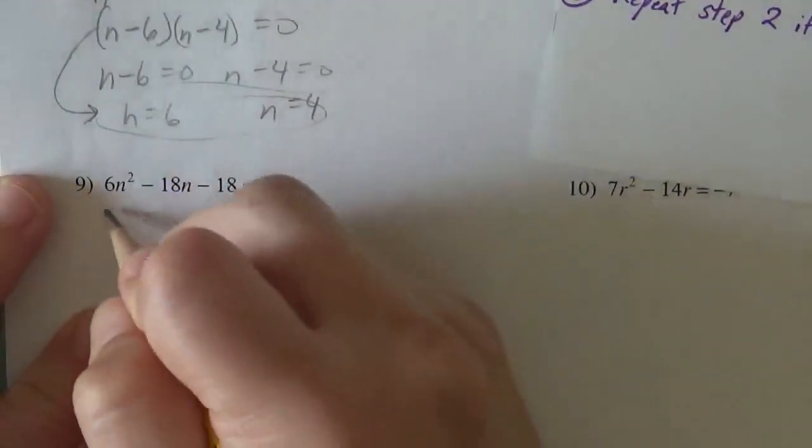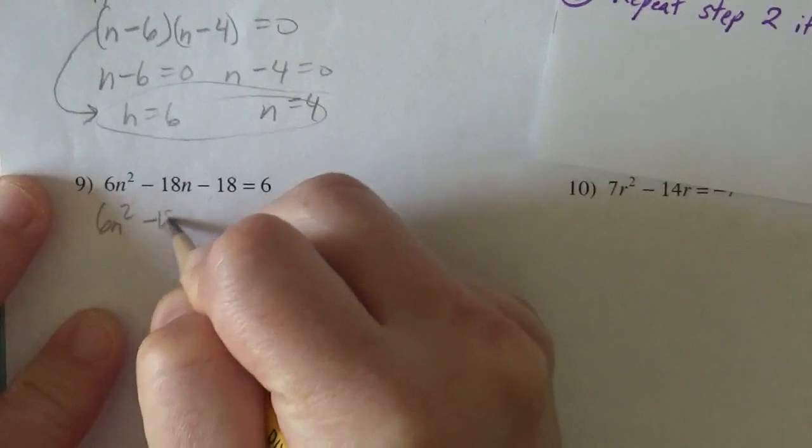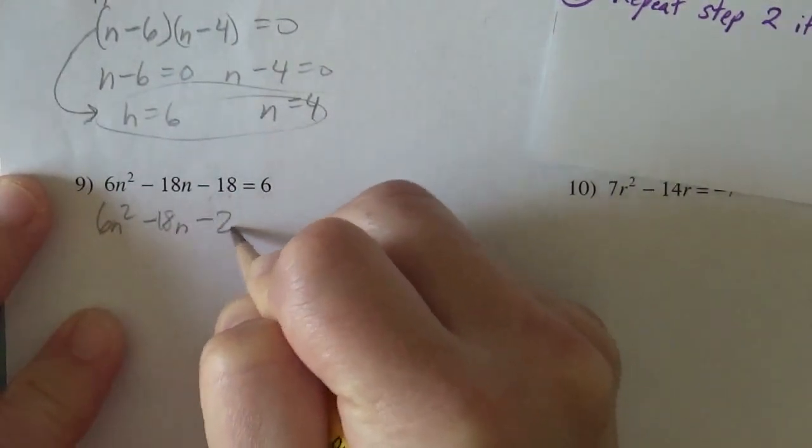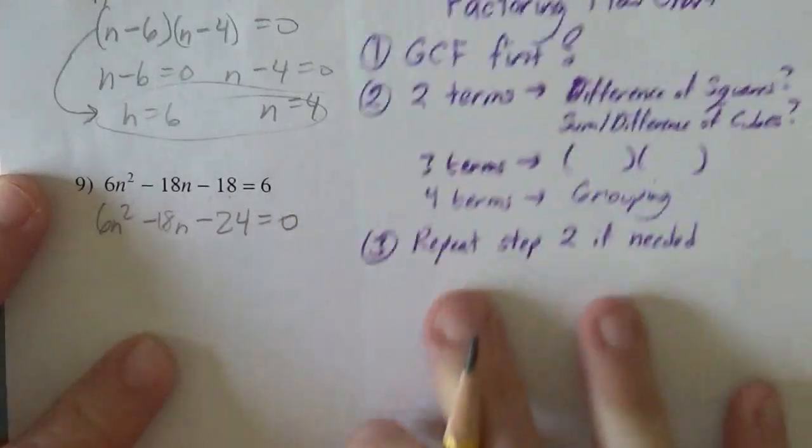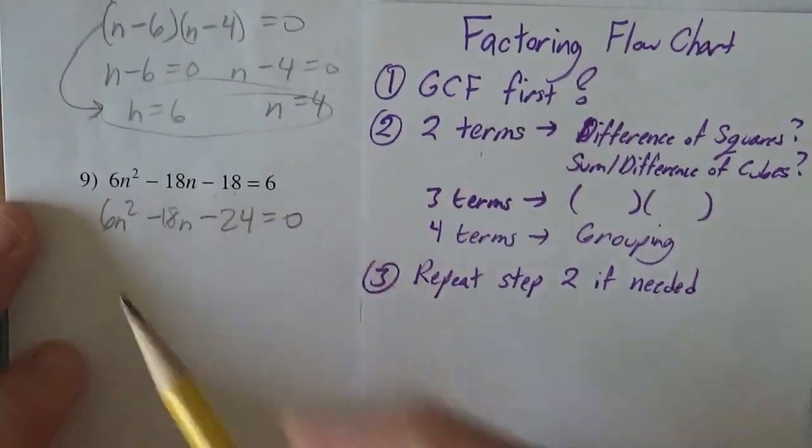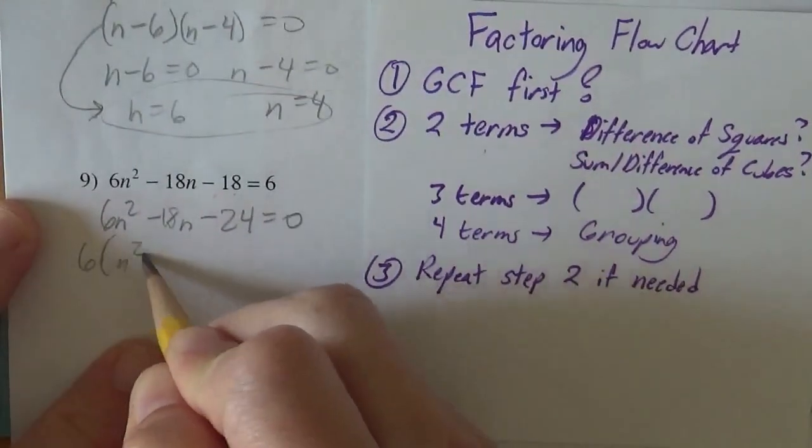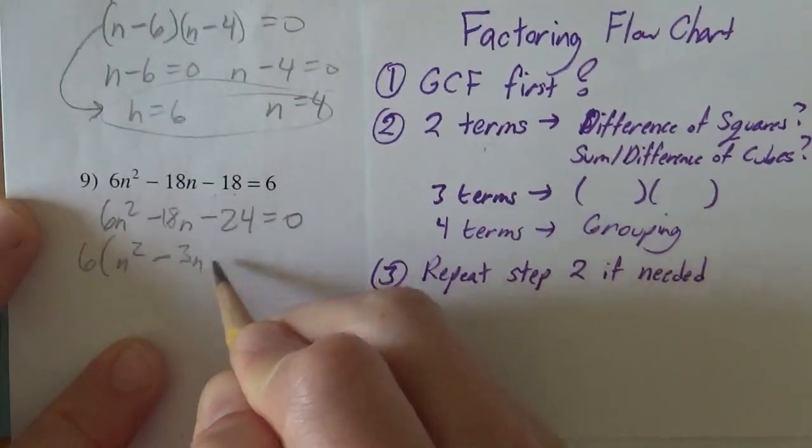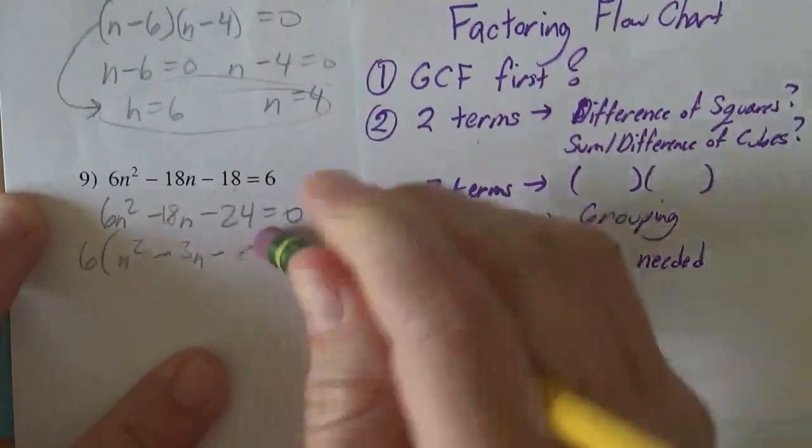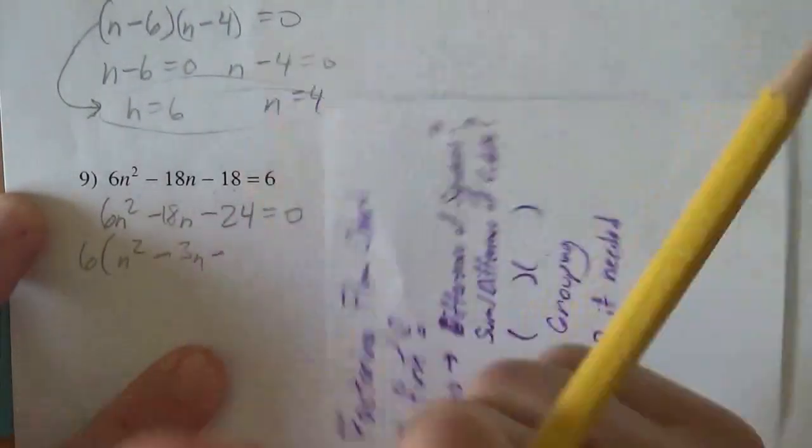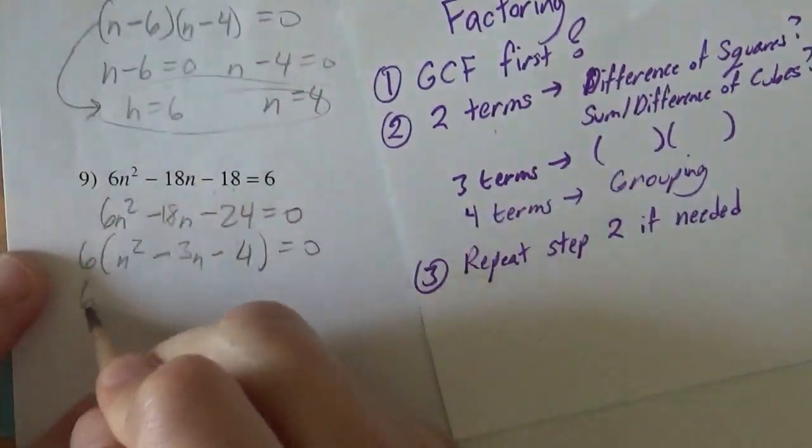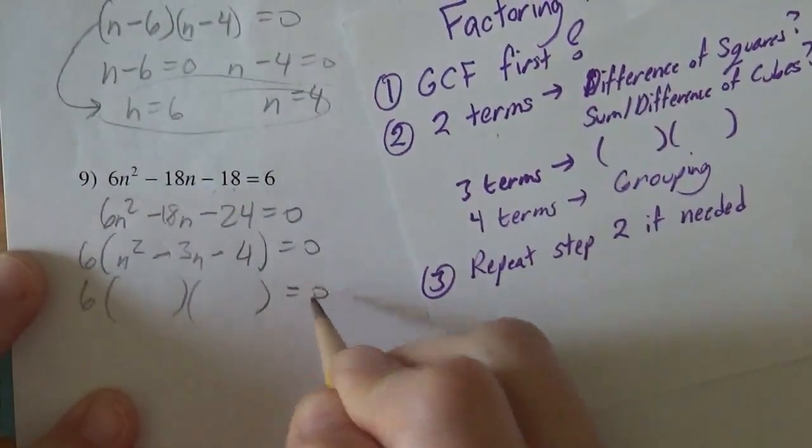Same thing again, add the six, so six n squared minus eighteen n, I'm subtracting the six, so minus twenty-four equals zero. And so our factoring flow chart, GCF first, we can take out a six, n squared minus three n minus four. Ah, coffee's still kicking in.